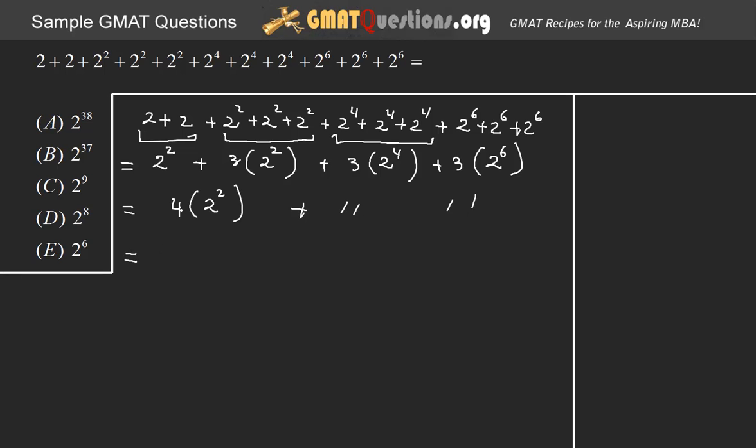And this 4 is going to be 2 squared. And 2 squared times 2 squared is 2 to the power of 4. Maybe some of you may need to see this. 2 to the power of 4. Actually, sorry about that. It's 2 squared. Made a mistake.